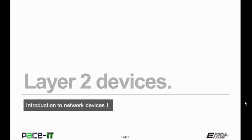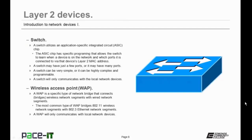Now let's move on to layer 2 devices. The first layer 2 device is the switch. A switch utilizes an application specific integrated circuit chip, an ASIC chip. The ASIC chip has specific programming that allows the switch to learn when a device is on the network and which ports it is connected to via that device's layer 2 MAC address. That's what makes a switch a layer 2 device. A switch may have just a few ports or many ports, kind of like the hub. Although a switch is smarter than a hub, it can still be very simple or highly complex and programmable.